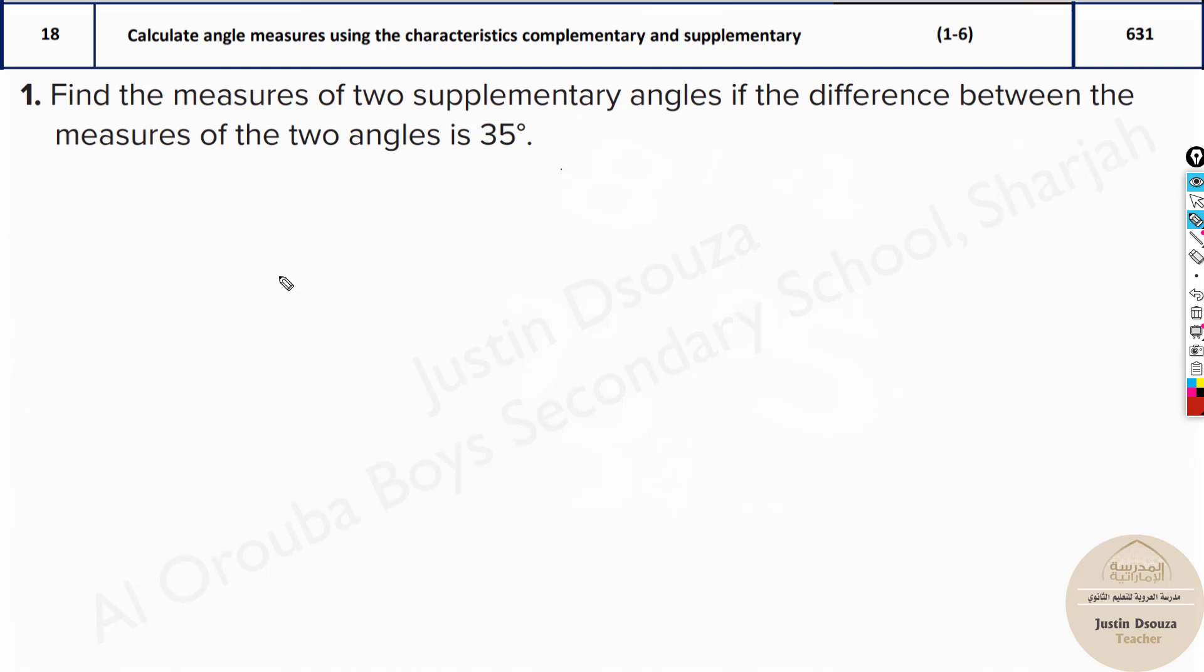They have not told us the measure of the two angles, but they've told us they're supplementary and their difference. If they are supplementary, when you add these two angles you get 180 degrees. If I take that as x1 plus x2, you will have 180 degrees. If you want to find them in terms of a single term, I will consider x1 to be just x. So x2 will be equal to 180 minus x. I can write x plus 180 minus x equals 180 degrees, and this cancels out and is balanced.